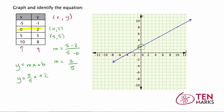You can also use the graph to find the slope. Look at any two points on the line. Remember that slope is the rise over the run. The rise is the vertical distance and the run is the horizontal distance. Count the vertical distance from y equals 2 up to y equals 5: 1, 2, 3. So the rise is 3. Now count the horizontal distance for the run: 1, 2, 3, 4, 5. So you have a rise of 3 and a run of 5, which is the same result as the slope formula.